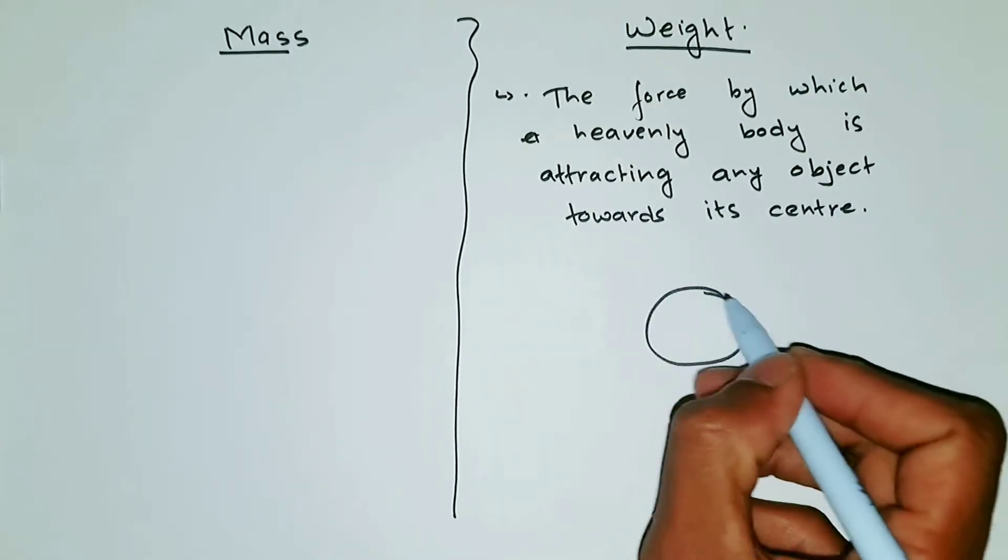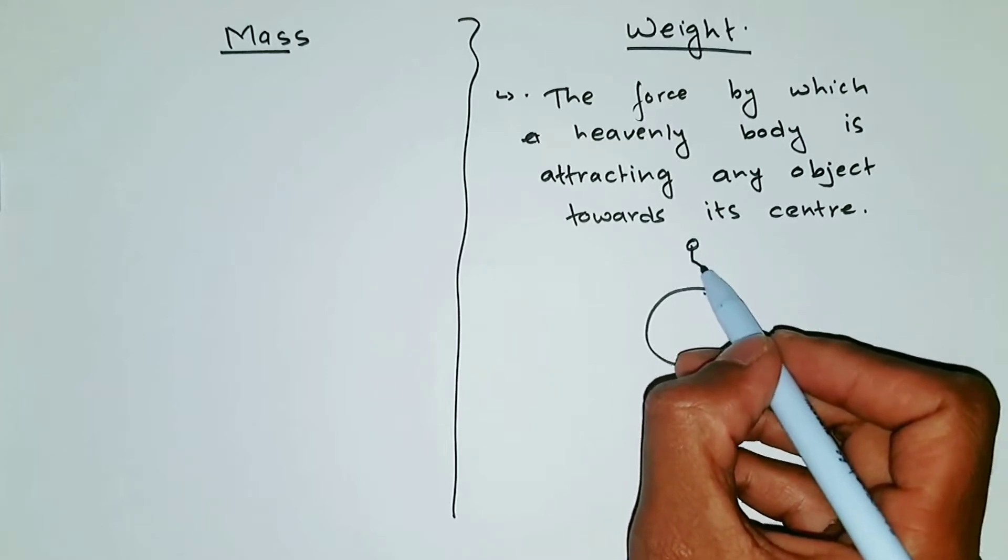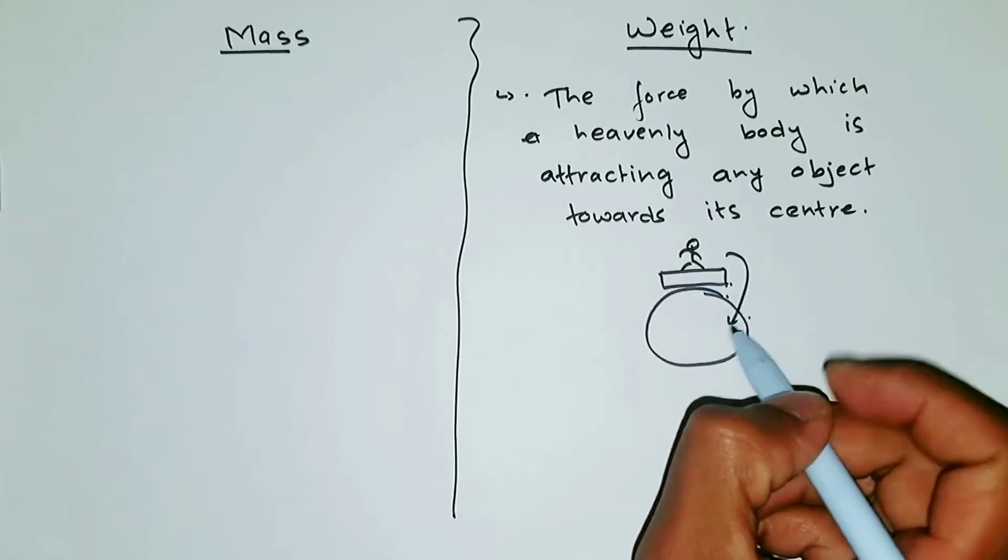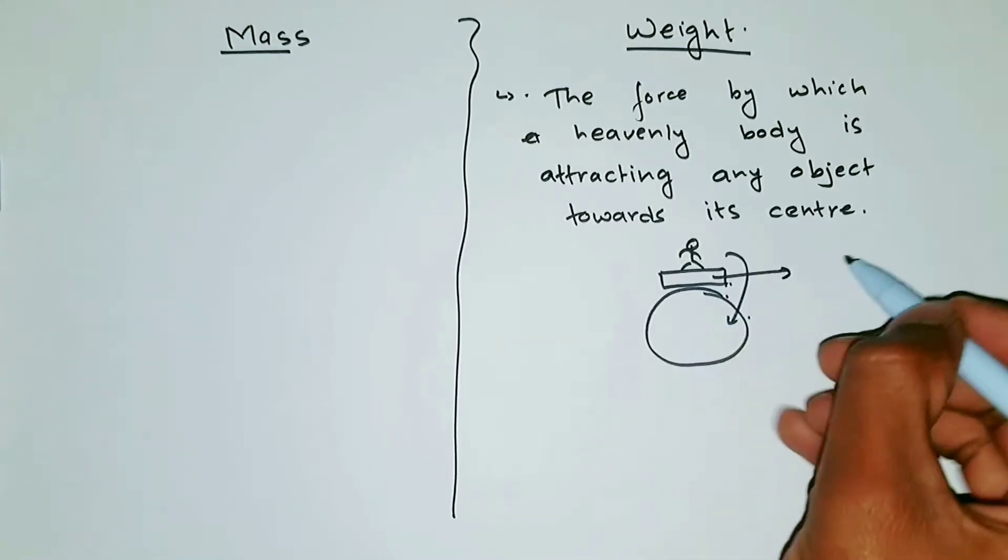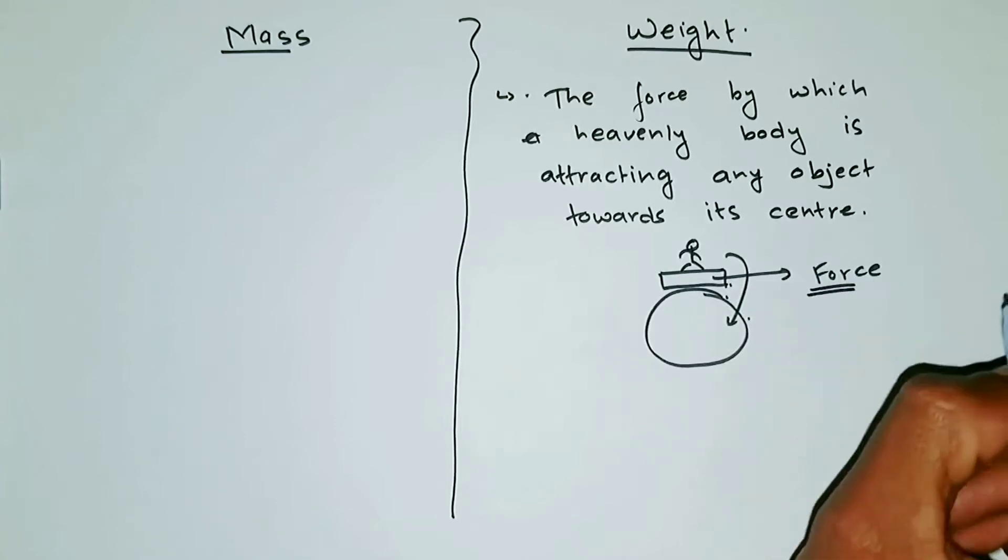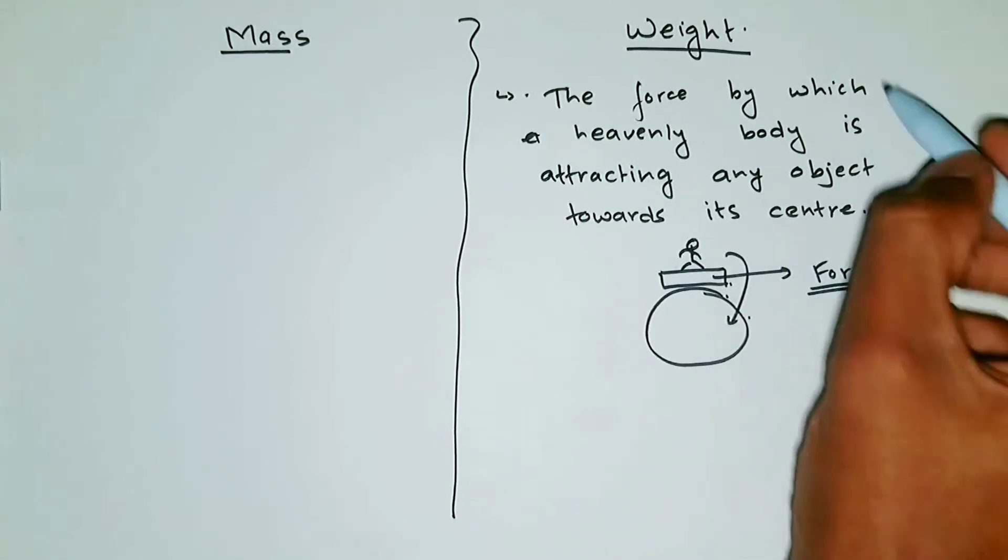So there is a huge Earth, and you are here, and if you keep a weighing machine here, this Earth is attracting you towards its center. This weighing machine will show you by how much force the Earth is attracting you towards its center, and this force is weight.